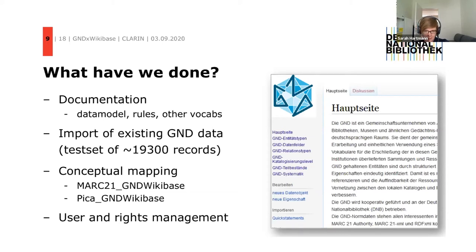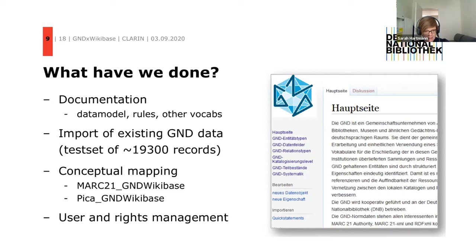We imported a test set of approximately 90,000 existing GND records into the Wikibase instance. To do this we first did a conceptual model, testing two different mappings — one based on MARC 21 and one based on our internal format — to check what is best for mapping data for import and export purposes. The testing is not fully finished, but we can say the internal format is much easier to map, though we cannot easily share those mappings with the wider community if they are unfamiliar with those specific fields and subfields.